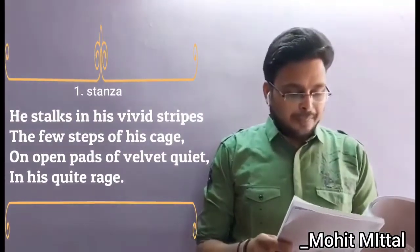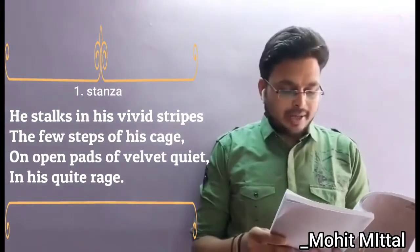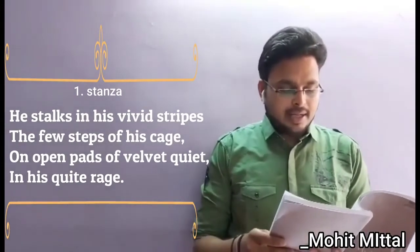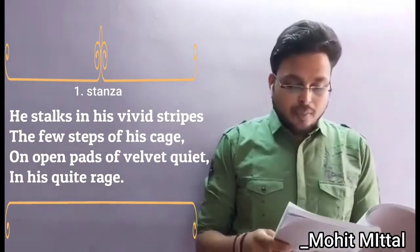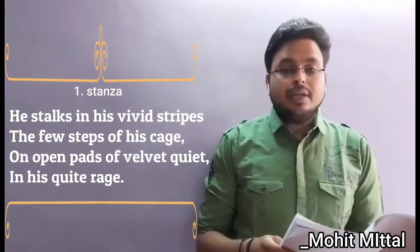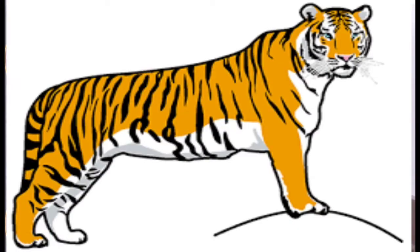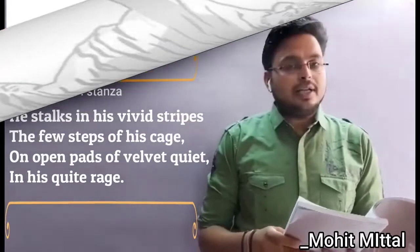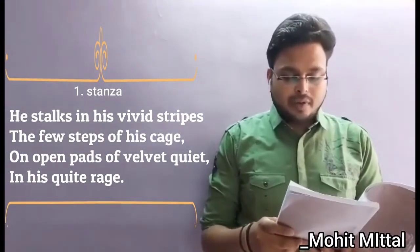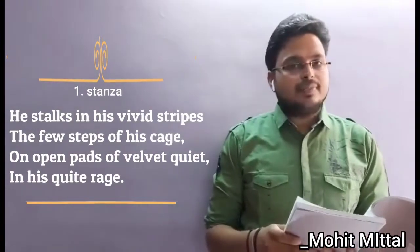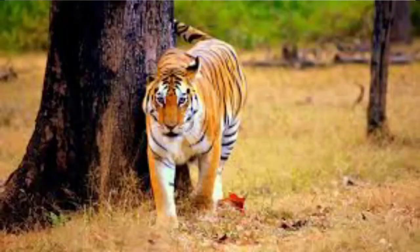'On pads of velvet quiet, in his quiet rage.' Rage means anger. 'Pads' means the paws. 'On pads of velvet quiet' means the paws are very soft like velvet. 'In his quiet rage' means no noise is produced by the tiger when it walks — it moves in silent anger.